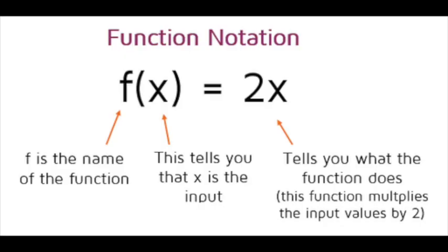Instead of writing y, we write f parentheses x, which is pronounced f of x. So we would pronounce this f of x equals 2x, where f is the name of the function. Then inside the parentheses, x is the input for this function. And on the other side of the equal sign, you have the rule that tells you how to get back your outputs.